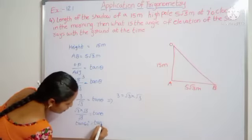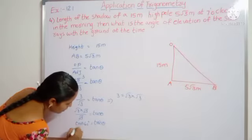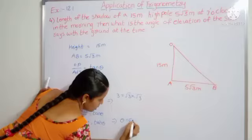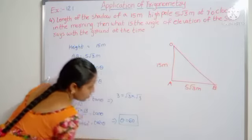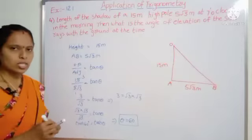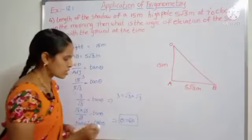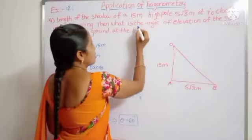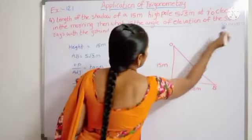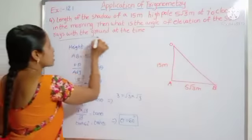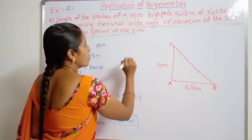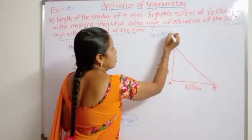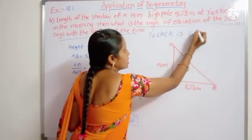Equal to tan theta. Tan can get cancelled. Theta equals 60 degrees. This is the answer. Angle of elevation is theta equals 60 degrees. So the angle of elevation of the sun rays with the ground at the time of 7 o'clock is 60 degrees.